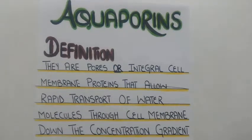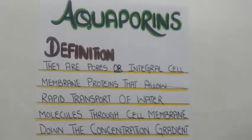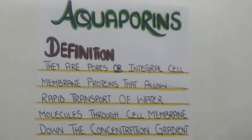Aquaporins transport water across the cell membrane down the concentration gradient. One important point to note here is that aquaporins are water channels — they only allow passage of water molecules. They are not ion channels; they will not allow passage of any ion or molecule through them.